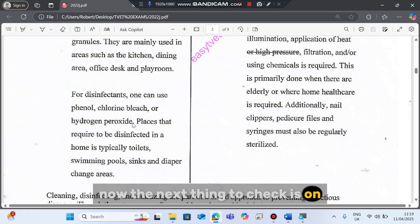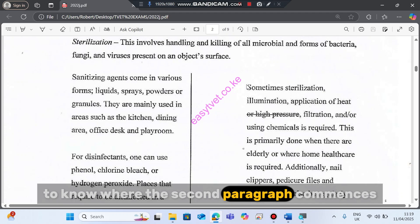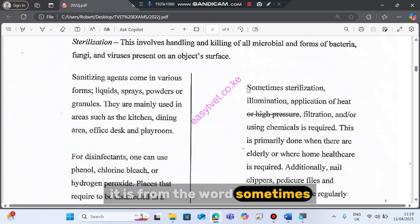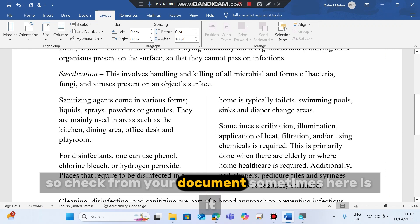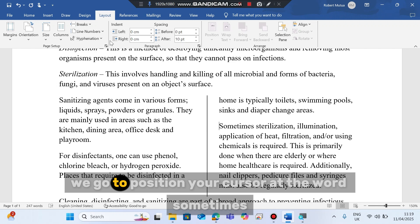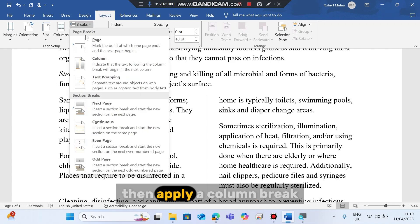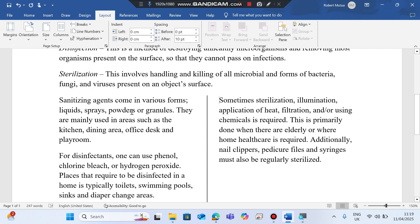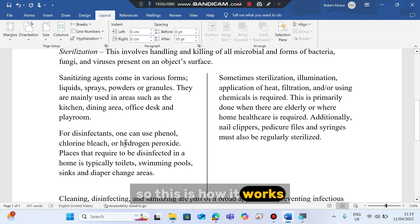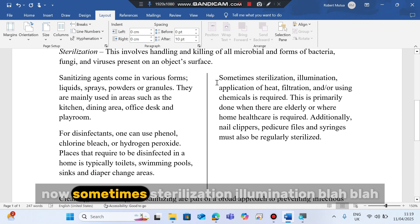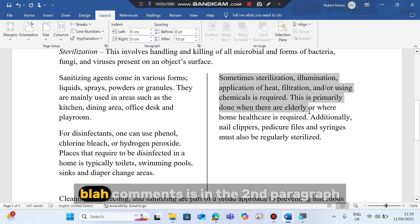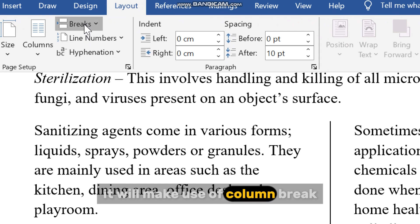Now the next thing to check is to know where the second paragraph commences. It is from the word sometimes. Sometimes, so check from your document. Sometimes, here it is. So in this case, position your cursor at the word sometimes or before that word, then go to breaks, then apply a column break. So this is how it works. Now sometimes standardization illumination commences in the second paragraph. We make use of column break.